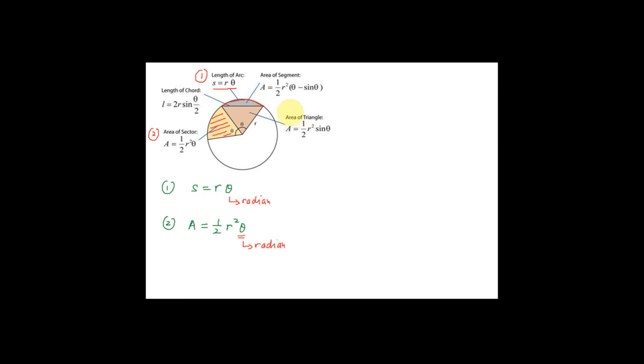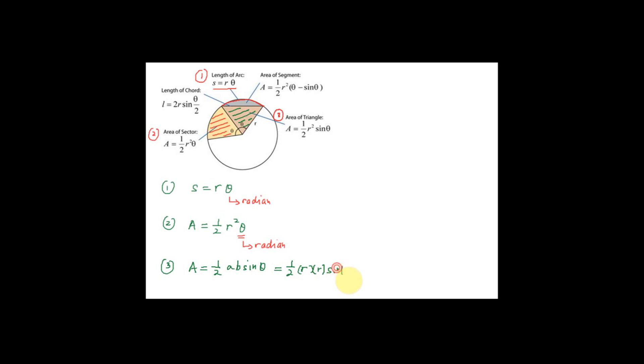Now I move to the third formula, that is the area of triangle. The area of triangle here is given by the formula A equal to half AB sine theta. Since A and B are equal to the radius R, therefore the formula becomes half R times R sine theta, which is equal to half R square sine theta.